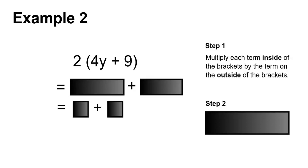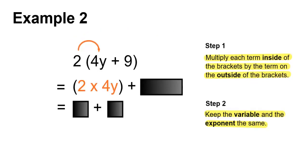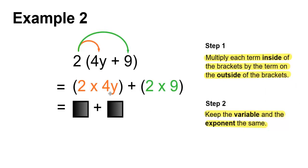Example 2: 5 times 4y. Step 1: Multiply each term inside the brackets by the term on the outside of the brackets. Step 2: Keep the variable and the exponent the same. 2 times 4y plus 2 times 9. 2 times 4 is 8, giving us 8y, plus 2 times 9 is 18.